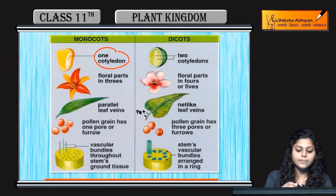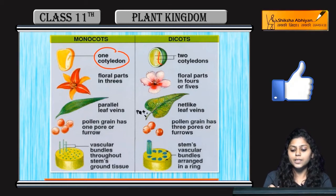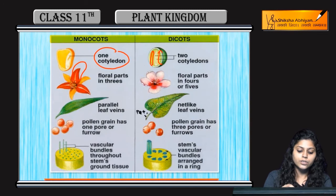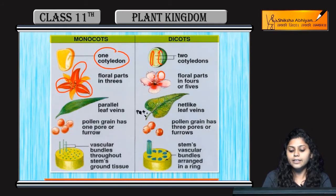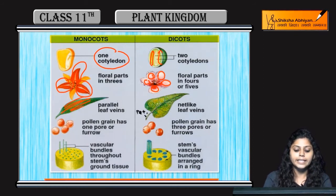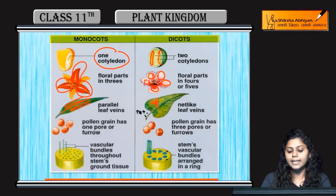On the slide: one cotyledon is present in monocots whereas two cotyledons are present in dicots. Floral parts are in multiples of three in monocots and four to five in dicots. Leaf veins that appear parallel indicate monocots.